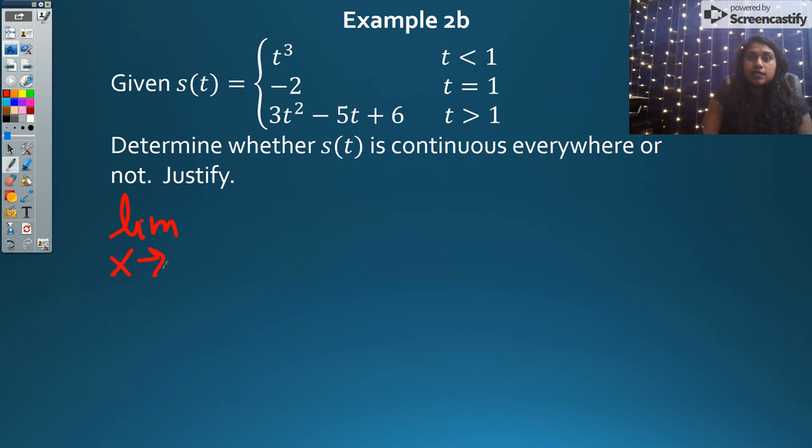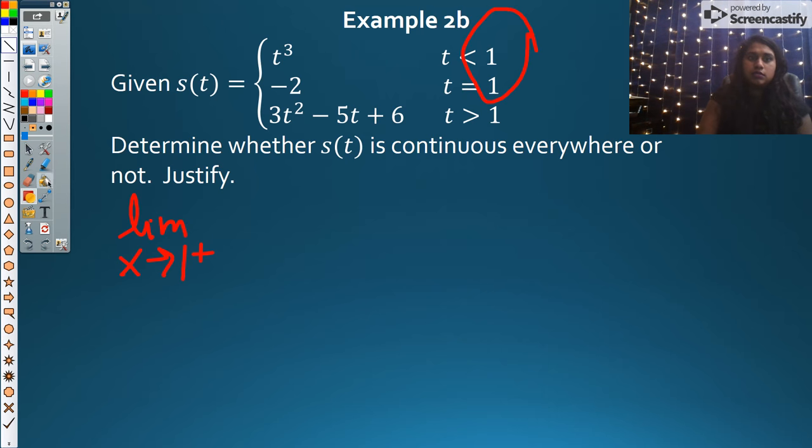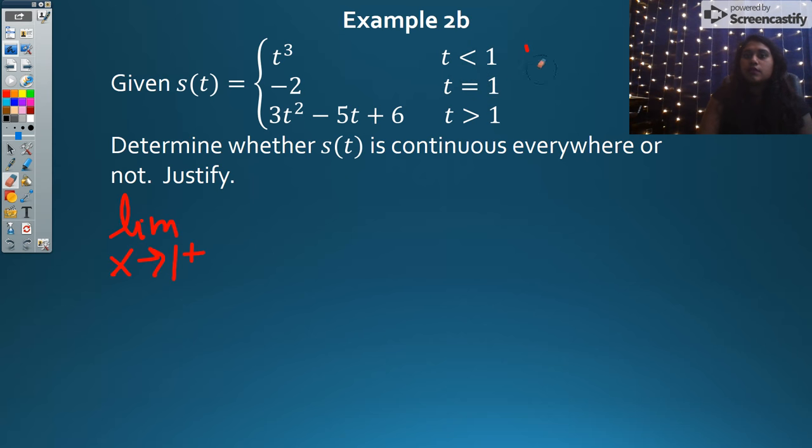So let's figure this out. What is my limit as x approaches one from the right? We are looking at the limit from the right, which means greater than one. That's the limit as t approaches one from the right of s(t). That means I'm going to be doing 3(1)² - 5(1) + 6. So this is 3 - 5, which is -2 + 6, which is positive 4.